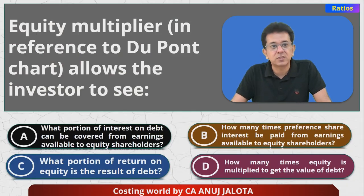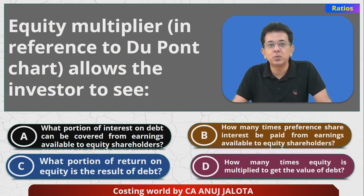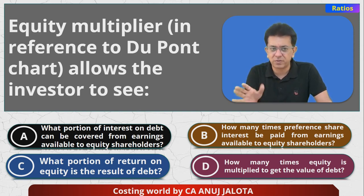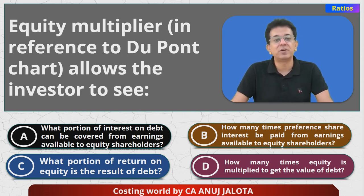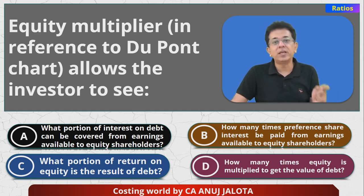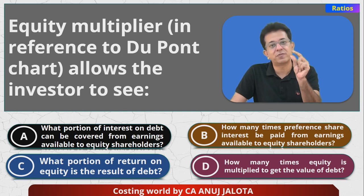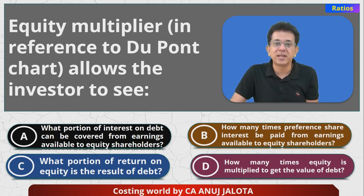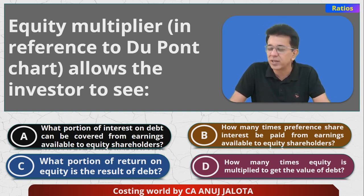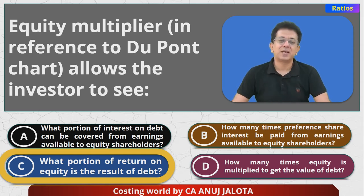Coming back to the options: Option A refers to interest coverage ratio — not relevant here. Option B is about preference share interest — not relevant. Option C says 'what portion of return on equity is a result of debt' — this makes maximum sense, because if the equity multiplier is 2:1, one rupee of assets is financed by equity and the rest by debt, so debt indirectly appears in this formula. Option D is a nonsensical statement. The answer is C.